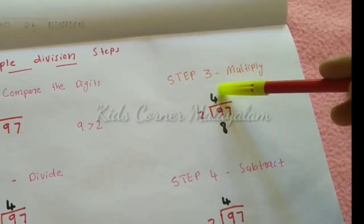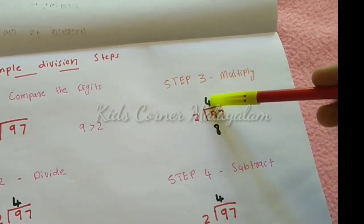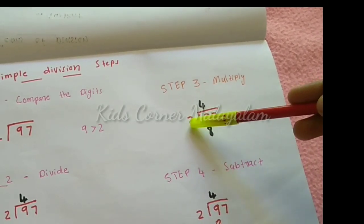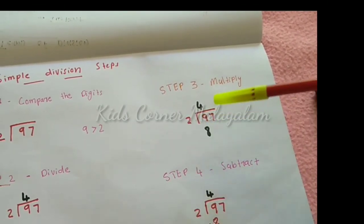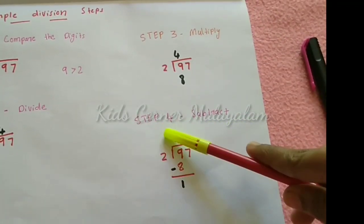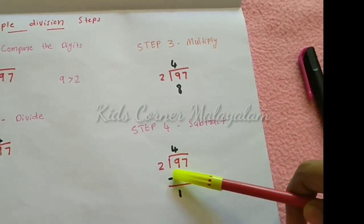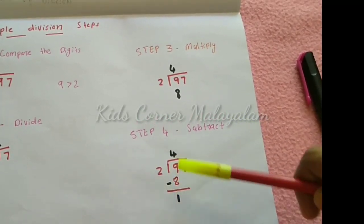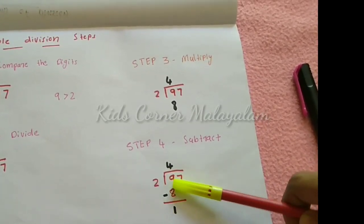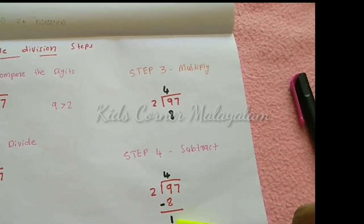Step 3: Multiply. Step 4: Subtract. Multiply then subtract. 8. 9 minus 8 equals 1.